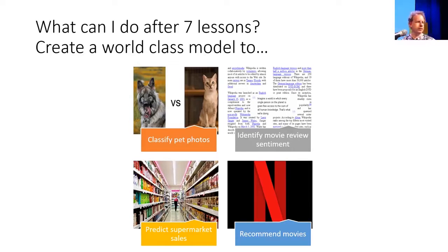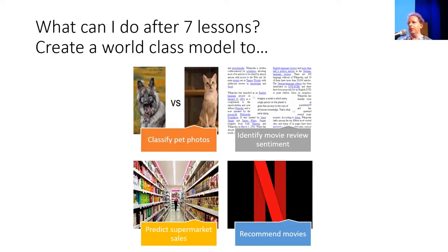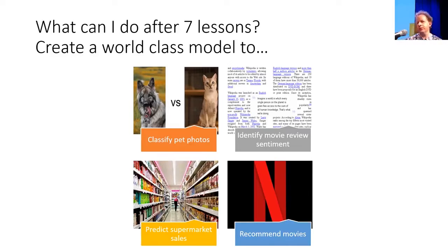This course — Practical Deep Learning for Coders — contains seven lessons, each about two hours long. We're expecting you to do about eight to ten hours of homework during the week, so it'll end up being around 70 to 80 hours of work. I know some people who work full-time on fast.ai and some who watch videos on double speed and never do homework — there are lots of different ways to do this.